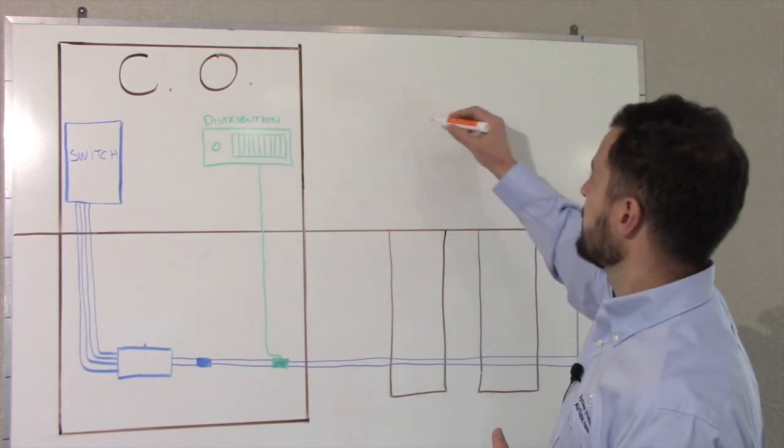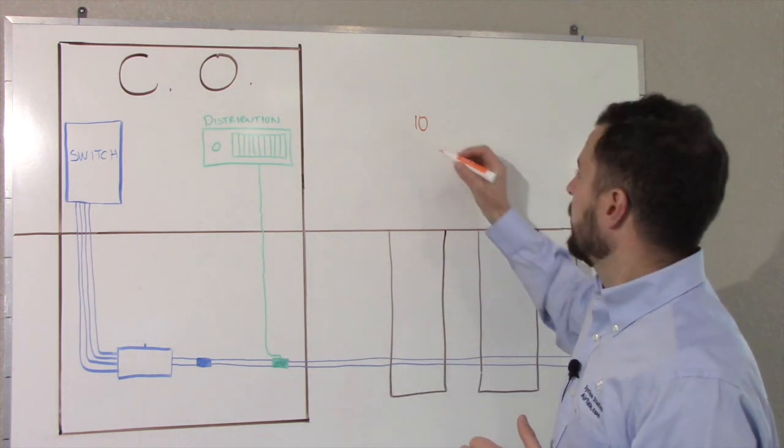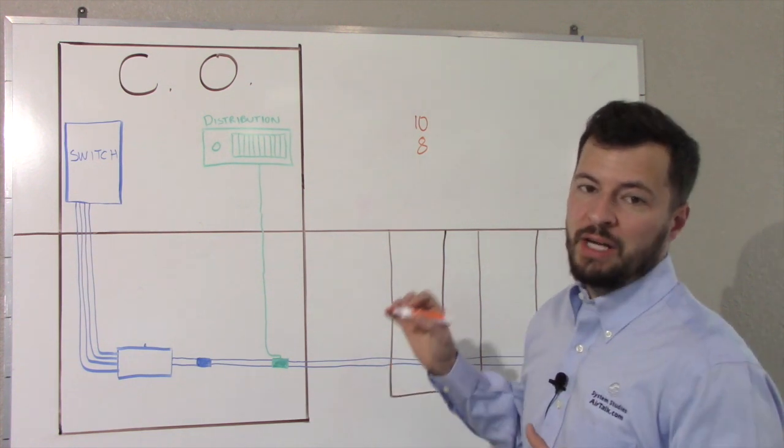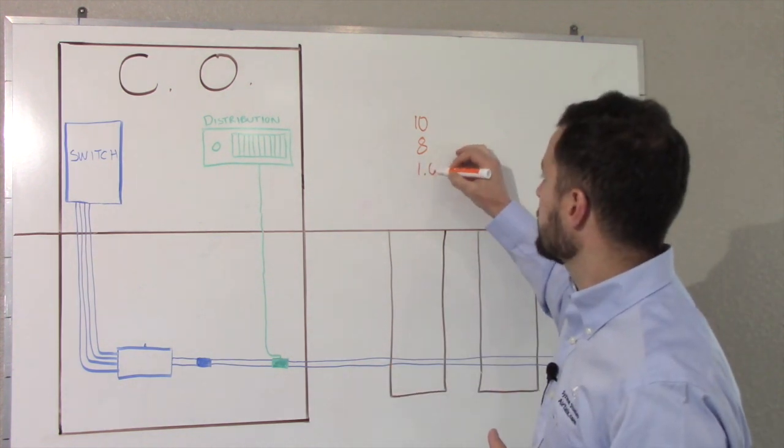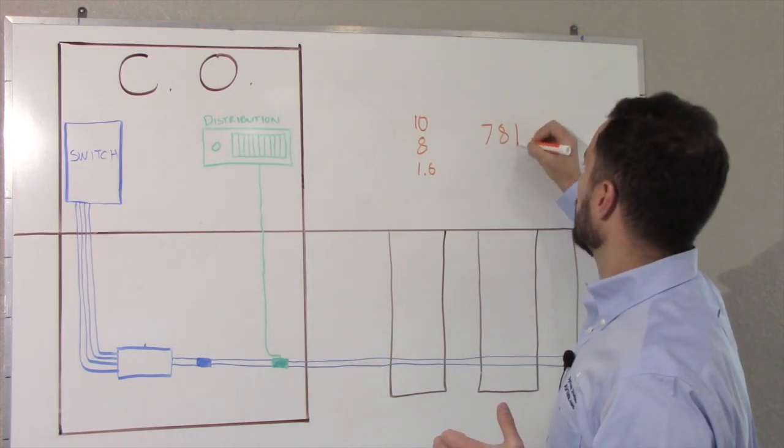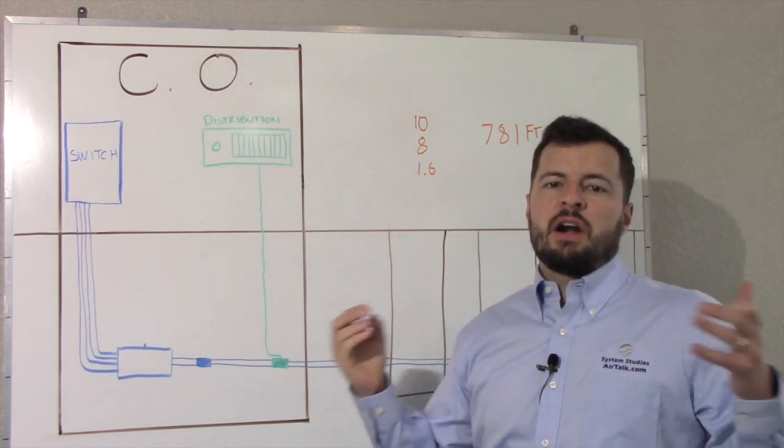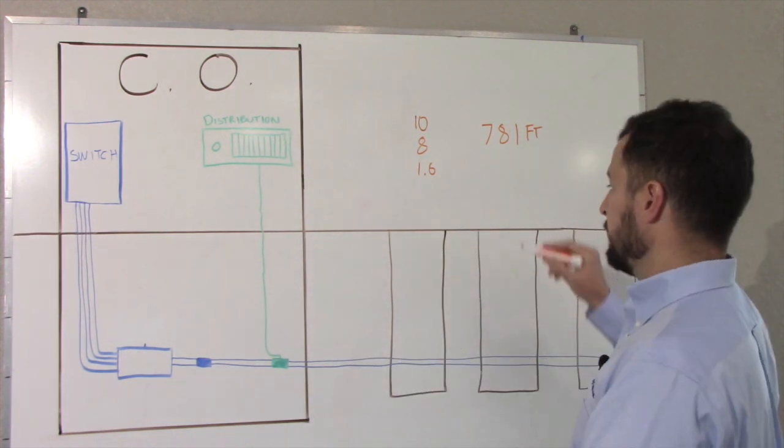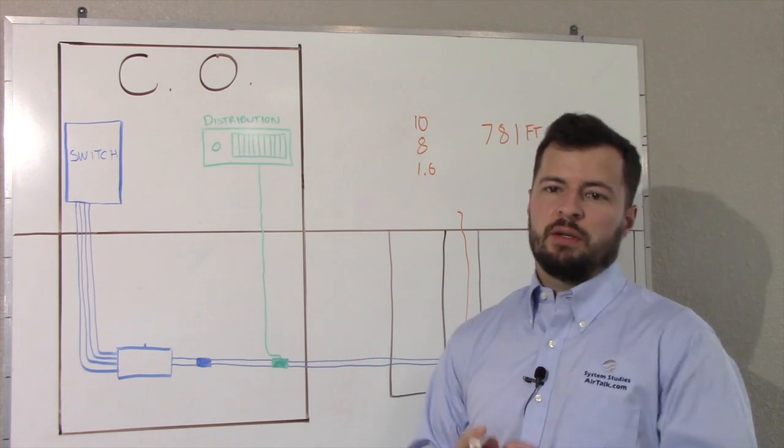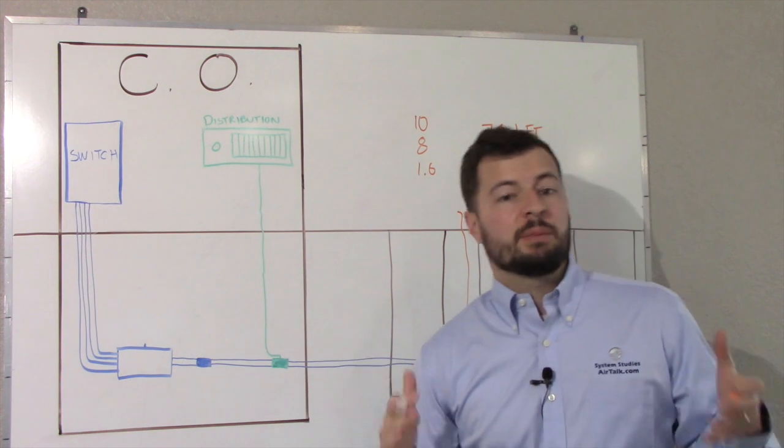In this example, our input pressure is 10 psi. Our flow rate is 8 standard cubic feet per hour, and our cable is an 1800-pair 26-gauge pulp cable, which has a pneumatic resistance of 1.6. Running these calculations, we have a result of 781 feet. This means that our area of search is no further than 781 feet away from our place of measurement at the distribution panel. There is no point in searching any other area out here for this particular leak because it's not going to be there.